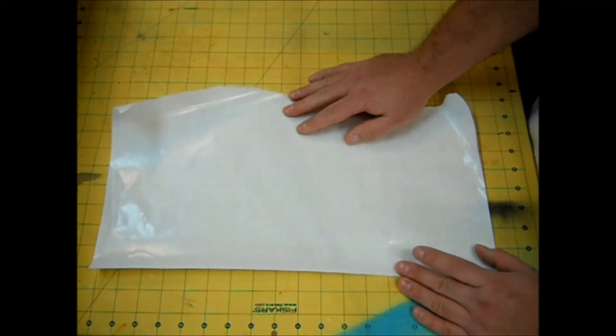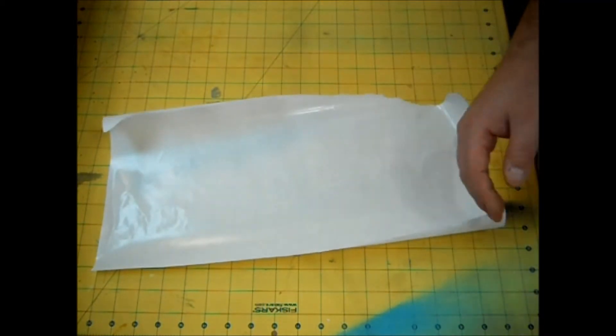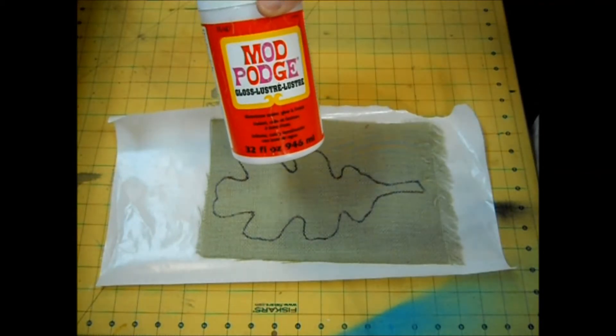Next you're going to want to get a piece of freezer paper, or parchment paper, or if you have a silicone mat, just something with a non-stick surface. You're going to put your burlap on there, and then get your Mod Podge.